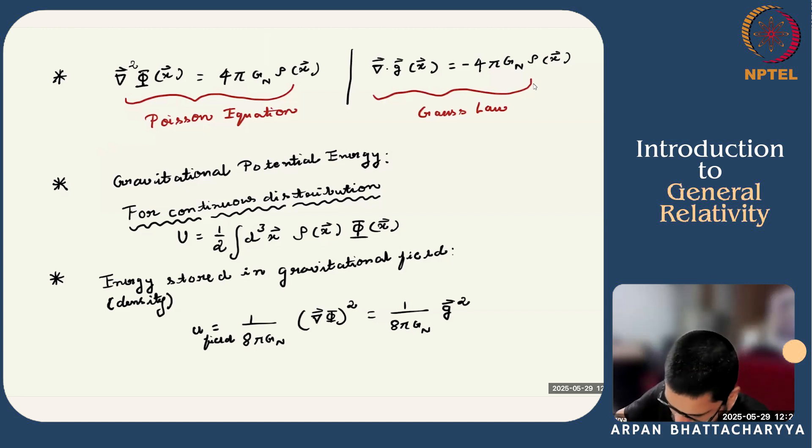Then, we wrote down the expression for the gravitational potential energy. For continuous distribution, it can be written in the following way, in terms of rho, the density, and the scalar potential phi.